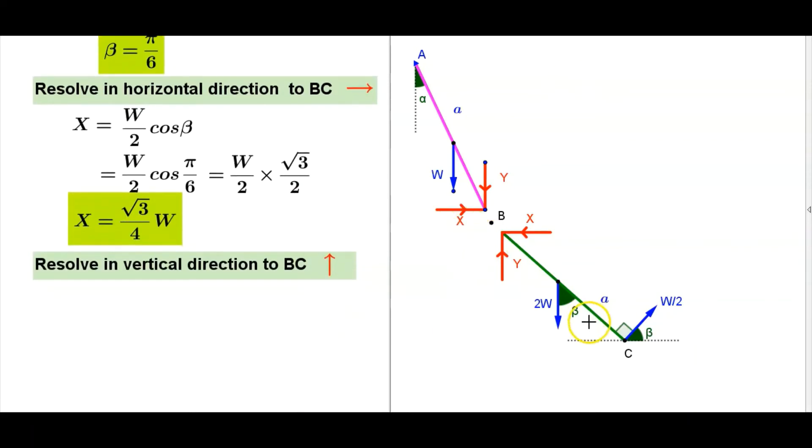Resolve in vertical direction to BC. Considering the equilibrium of BC, now we do resolve in vertical direction. This X won't come because it is horizontal forces. Therefore Y and 2W and vertical components of this force. Y minus 2W plus W/2 sin beta equals 0.